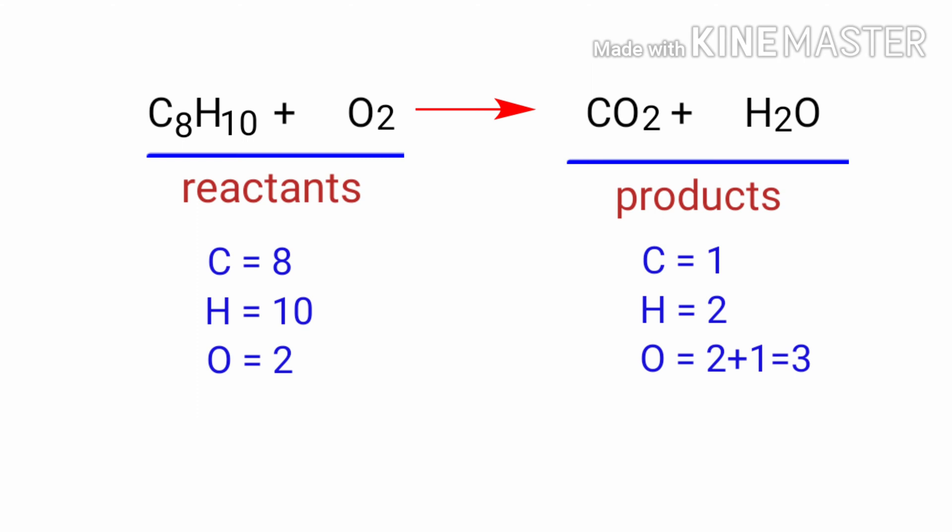In this equation, we need to balance the carbon atoms first. To do this, we need to put a coefficient of 8 in front of CO2. The carbon atoms are balanced.